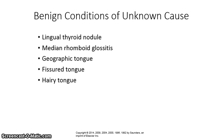Benign conditions of unknown cause include lingual thyroid nodule, median rhomboid glossitis, geographic tongue, fissured tongue, and hairy tongue.